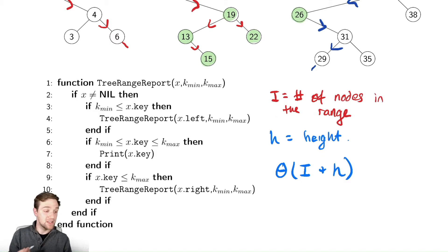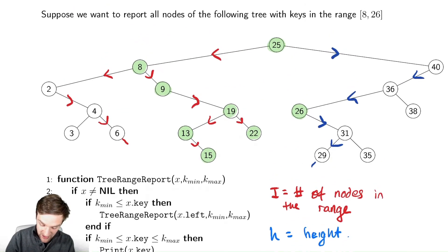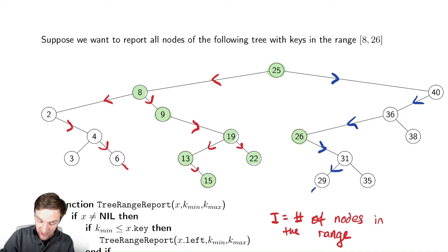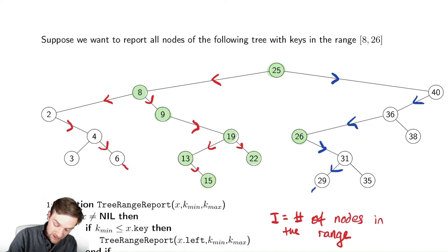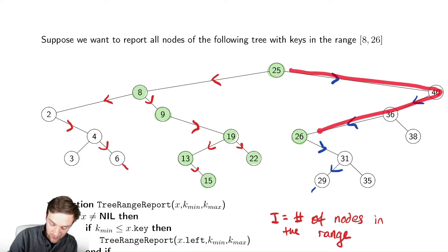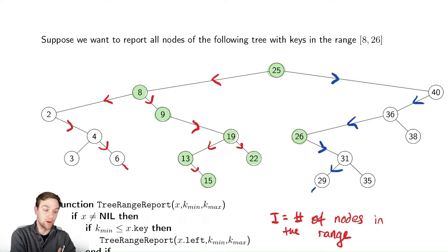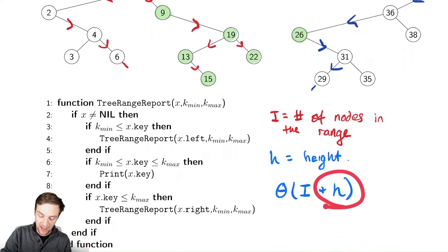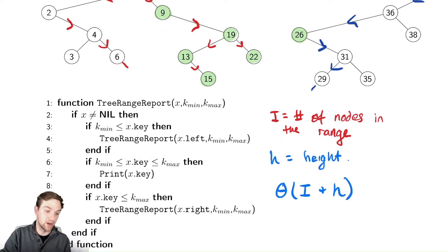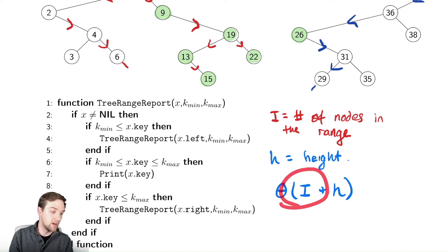Depending on specifics, you may be closer to the i term or the h term. For example, if you're reporting an empty range — say, values between 32 and 33 in our tree — you'd need to traverse right, left, left, right, and find nothing. So reporting an empty range looks more like Θ(h), while reporting many values like we did in our example brings you closer to Θ(i).